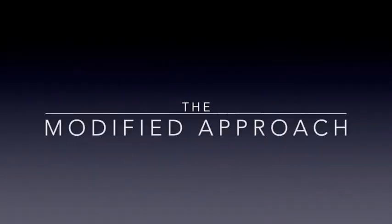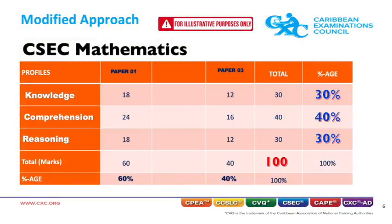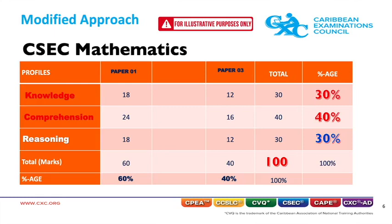The modified approach. Owing to the breach of the CSET mathematics paper 2 examination, the scores from paper 2 will not be used in grading the subject. Let us remove paper 2 from the assessment grid. The knowledge profile's contribution remains 30% of the candidate's final grade, the comprehension profile's contribution remains 40%, and reasoning remains 30%. This means that the overall profile contribution remains the same with paper 2 removed.